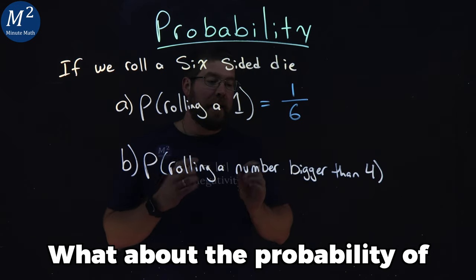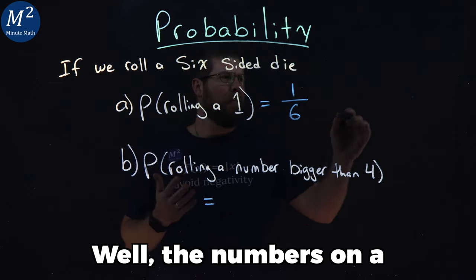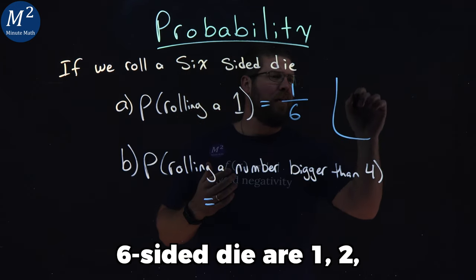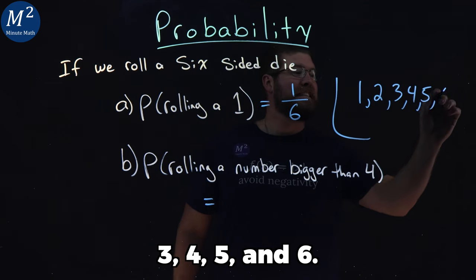What about the probability of rolling a number bigger than four? Well, if the numbers on a six-sided die are one, two, three, four, five, and six...